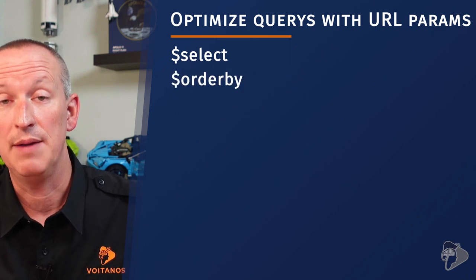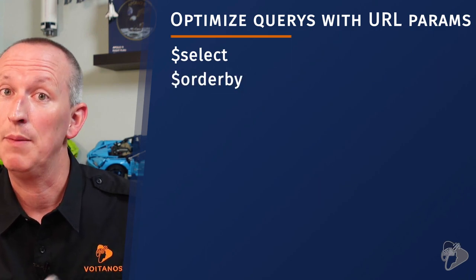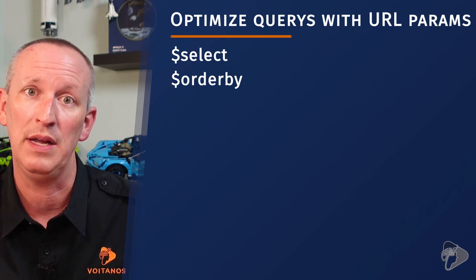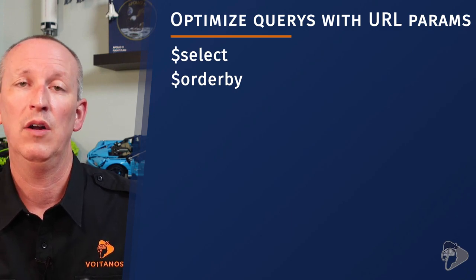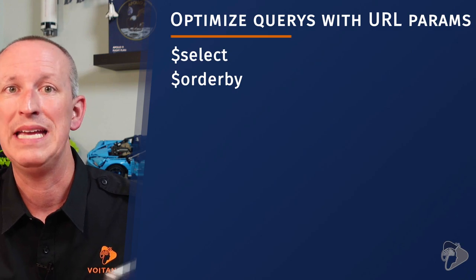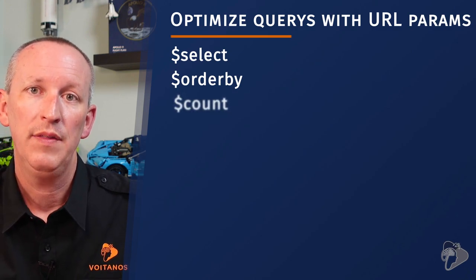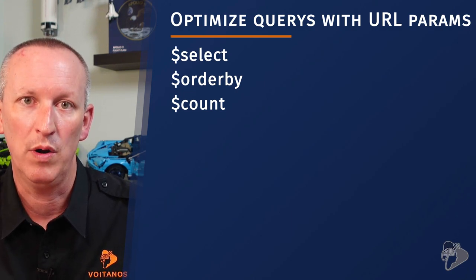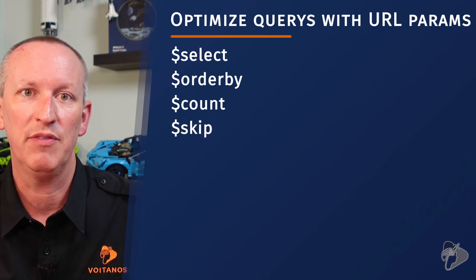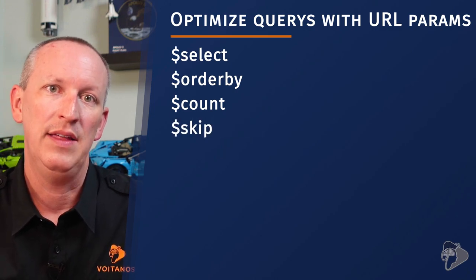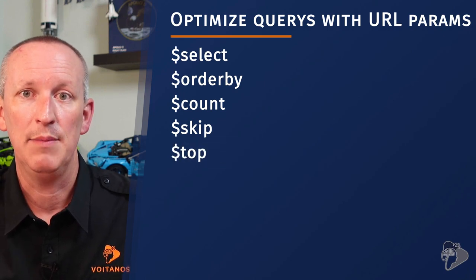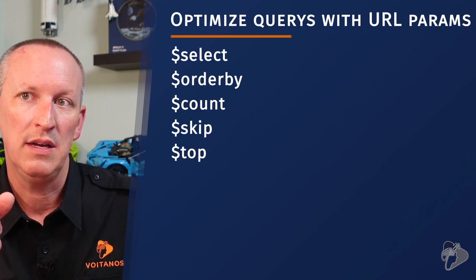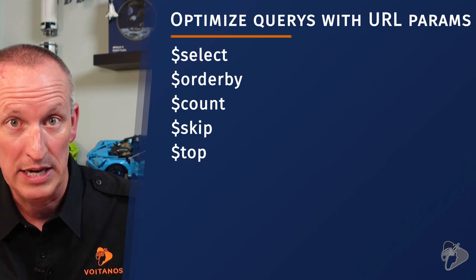The $select parameter allows you to specify a comma-delimited list of properties you want to receive in the response. The $orderby parameter enables developers to have data from Microsoft Graph pre-sorted — by default in ascending order, but you can add the descending keyword after the property, and it supports sorting by multiple fields separated by commas. The $count parameter returns the number of items in the result set rather than the actual items. The $skip parameter enables you to skip the first number of results, and the $top parameter limits the response to a specific number of records. Using $count, $skip, and $top together, you can create a paging implementation.